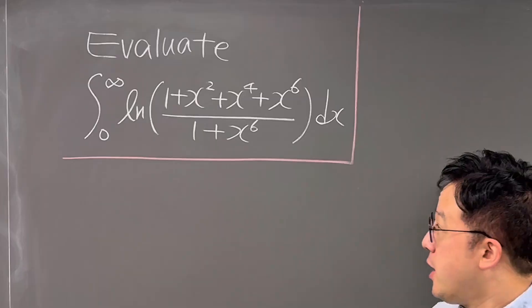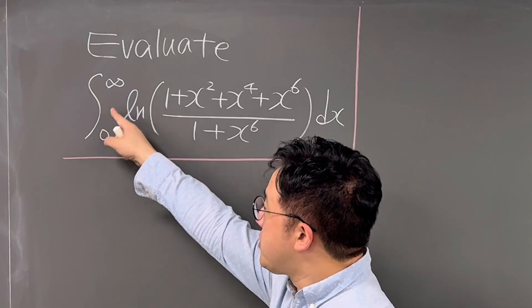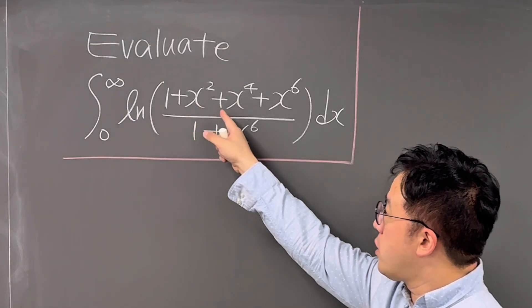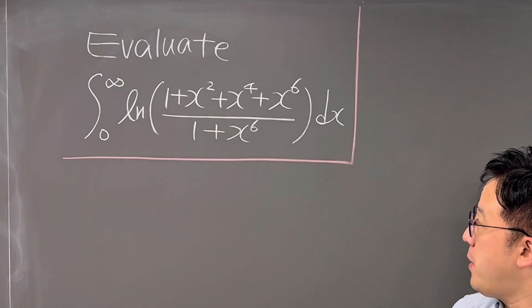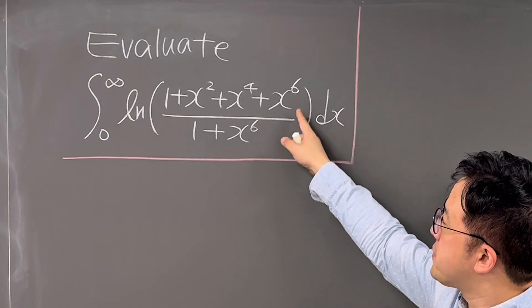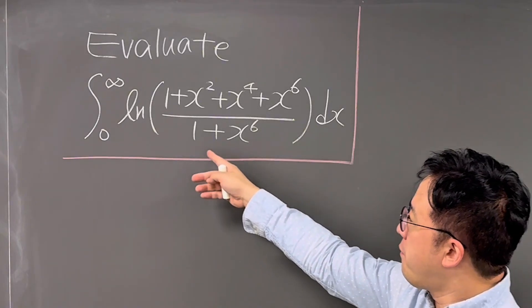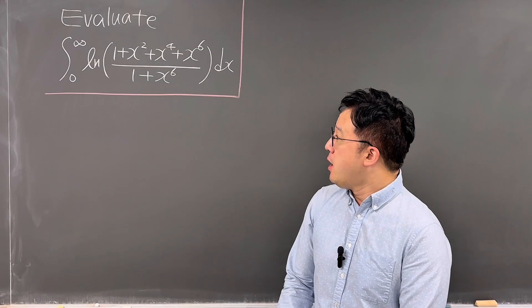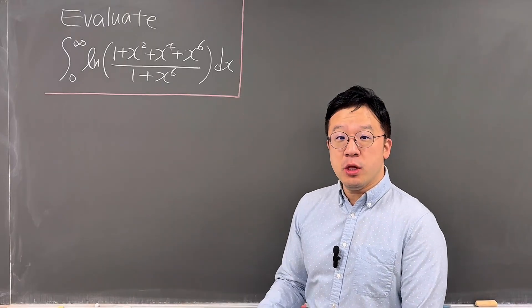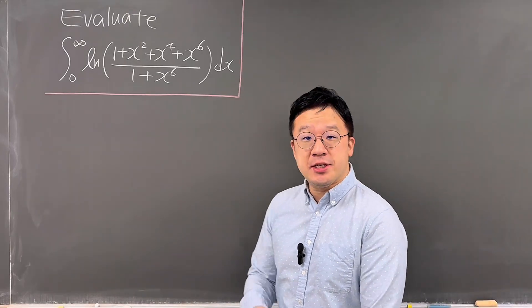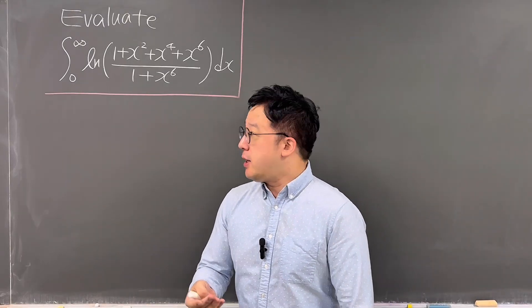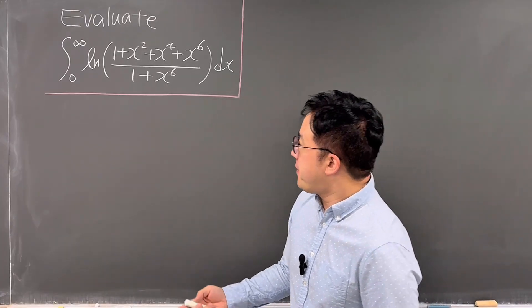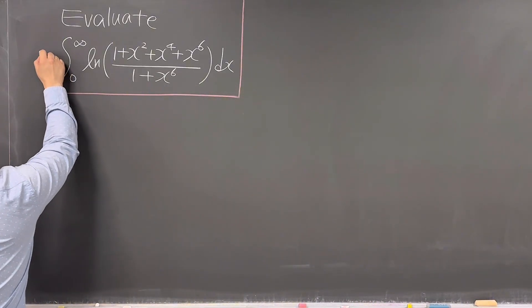Okay, here's the question. The question is: if I get this integral from 0 to infinity of ln of (1 + x² + x⁴ + x⁶) over (1 + x⁶) dx. For this integral, we'll be coming up with a more well-known integral, generalize it, and plug in what we have to get the value. So first, I'll be calling this integral I.